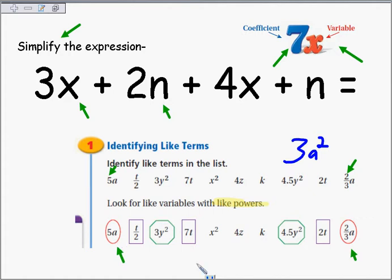Like 5a and 2 thirds times a? Is that a like term? Think about that for a second. Can I circle this in red?